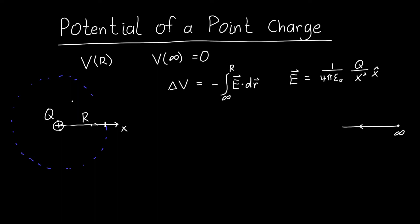And this electric field is pointing in the x-hat direction. Now our line element dr because we're going along the x-axis is just equal to dx times x-hat so nice and simple.